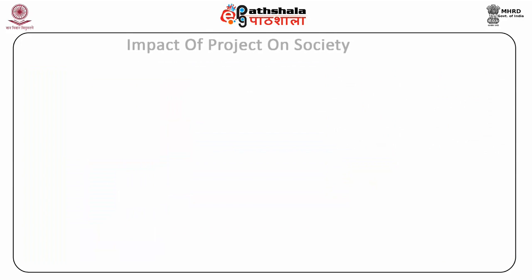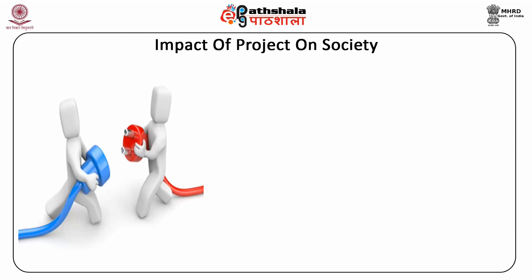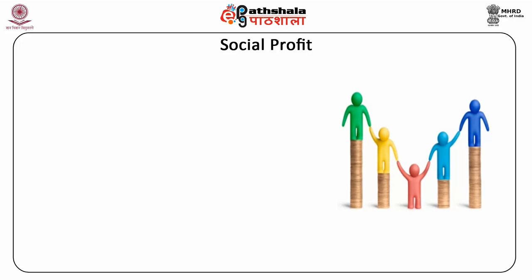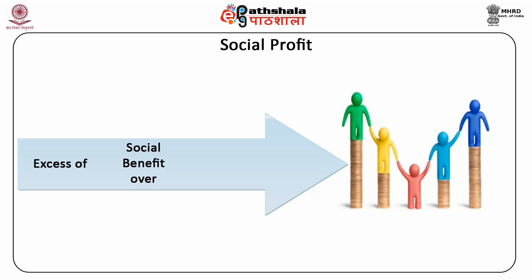In nutshell, the terms social cost and benefits are concerned with measurement of the impact of a project on society, which may be positive or negative. The positive impact is social benefit and the negative impact is social cost. When we evaluate a project from the point of view of society or the economy as a whole, it is called social cost-benefit analysis. Social profit may be defined as the excess of social benefits received by society from a firm's activities over the social cost borne by society attributable to the same firm.